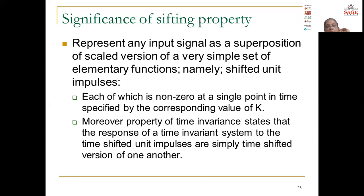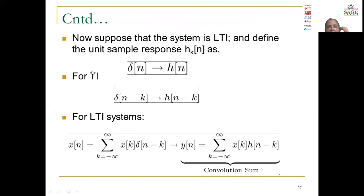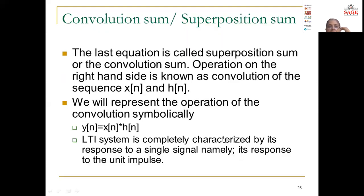The significance of this property is that it provides a scaled version of a very simple set of elementary functions, each non-zero at a single point in time. The property of time invariance states that the response to time-shifted unit impulses are simply time-shifted versions of one another. By applying the superposition theorem, for an LTI system, the final equation is called the superposition sum or convolution sum. It is the convolution property that completely characterizes the system by its response to a single signal — namely its response to the unit impulse.